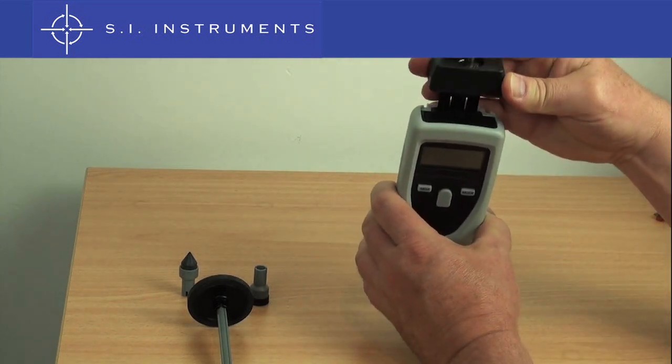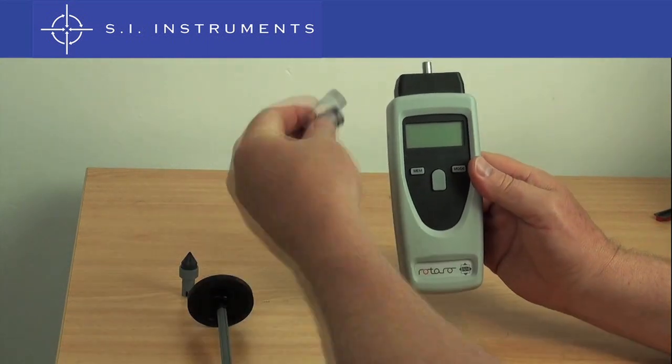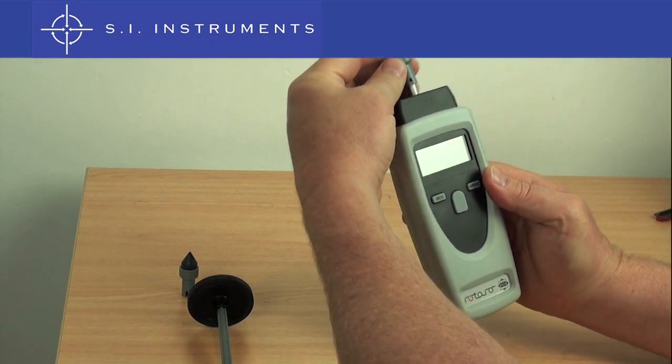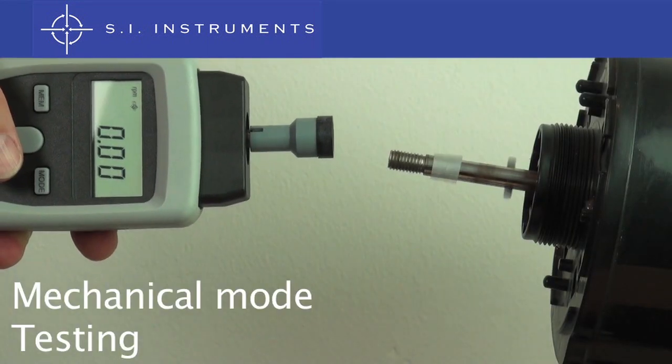The mechanical mode permits the user to connect a mechanical adapter that accepts a variety of contact tips as well as a surface speed wheel for precise measurement of contact RPM or surface speed and length.